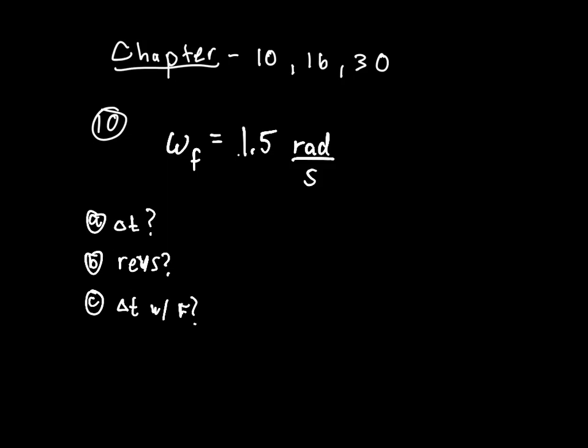The problem also tells us to consider the merry-go-round problem from the textbook, so the idea is to go back and look at that problem worked out in detail. That's where a lot of the extra numbers come from. They also give you alpha, the angular acceleration.